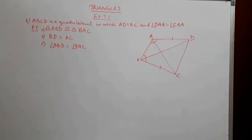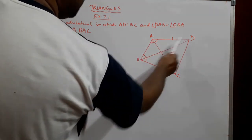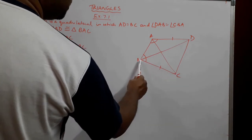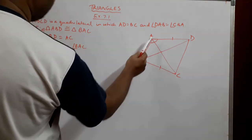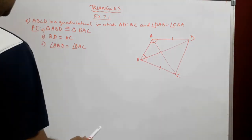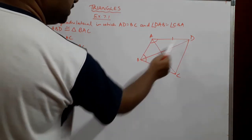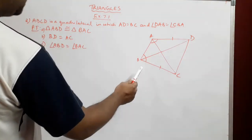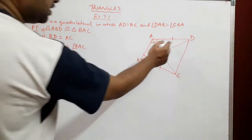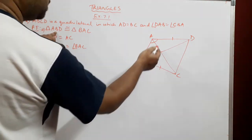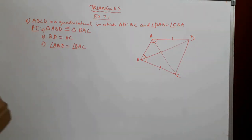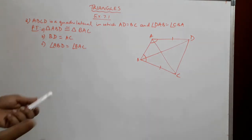Our next problem says: ABCD is a quadrilateral in which AD is equal to BC, and angle DAB is equal to angle CBA. We are asked to prove triangle ABD is congruent to triangle BAC, and also prove BD equal to AC, and angle ABD equal to angle BAC. Since the figure can be confusing, I will draw just the triangles in question.